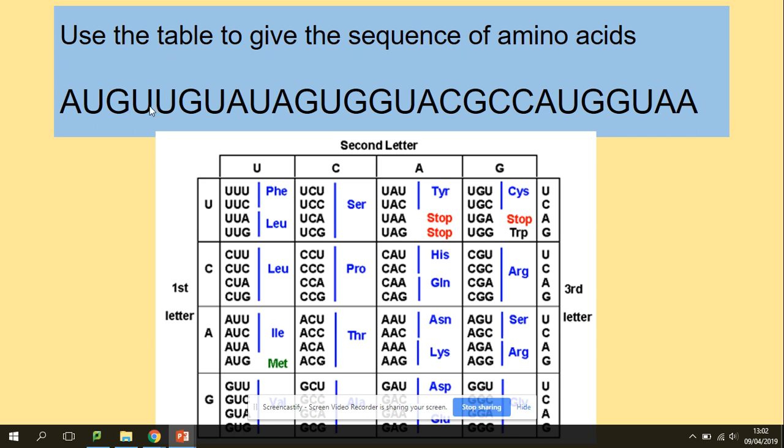Next codon here, we've got U, U, G. So let's see what U, U, G codon codes for. U, U, and G third position codes for LEU. So that's the amino acid coded by U, U, G. So you can try and code for all of those amino acids coded by the codon.